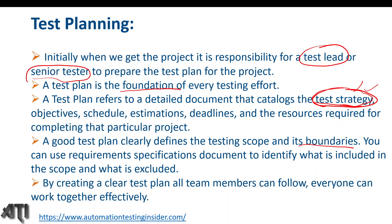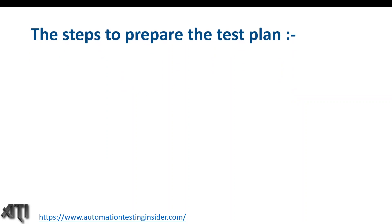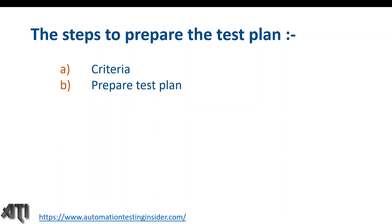The steps to prepare a test plan are: first, criteria or prerequisite criteria to prepare the test plan; second, prepare the test plan; and third, get the approval of the test plan from the test manager. Once the test plan is prepared by the senior test member or test lead, it should be approved by the manager or test manager.